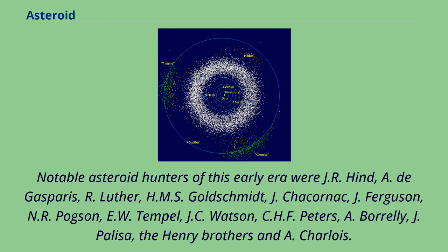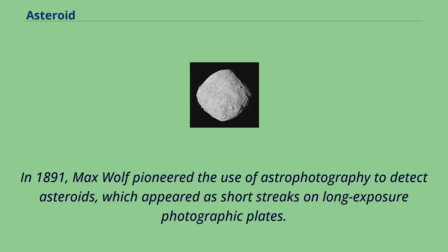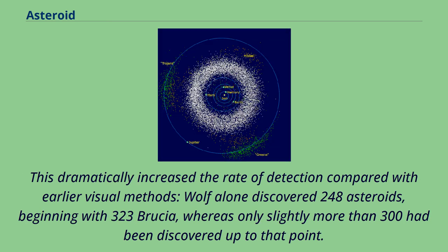Notable asteroid hunters of this early era were J.R. Hind, A. De Gasparis, R. Luther, H.M.S. Goldschmidt, J. Chakornak, J. Ferguson, N.R. Pogson, E.W. Temple, J.C. Watson, C.H.F. Peters, A. Borrelli, J. Pallisa, the Henry brothers, and A. Charlois. In 1891, Max Wolff pioneered the use of astrophotography to detect asteroids, which appeared as short streaks on long-exposure photographic plates. This dramatically increased the rate of detection; Wolff alone discovered 248 asteroids, beginning with 323 Brucha, whereas only slightly more than 300 had been discovered up to that point.